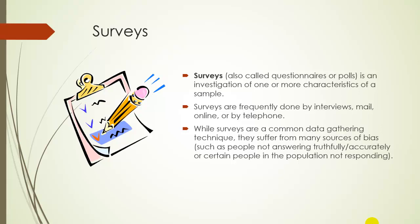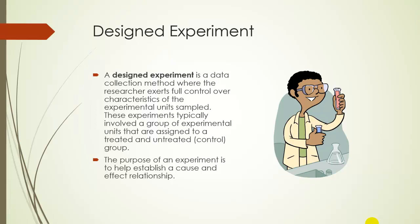We'll explore more on bias in a little bit. Another type of data collection technique is called a designed experiment — a data collection method where the researcher exerts full control over the characteristics of the experimental units sampled. These experiments typically involve a group of experimental units assigned to a treated and an untreated, or control, group. Basically, the idea of an experiment is all about control — you are trying to help establish a cause and effect relationship, and without exerting some control over the situation, you really can't figure out what's the cause and what's the effect.